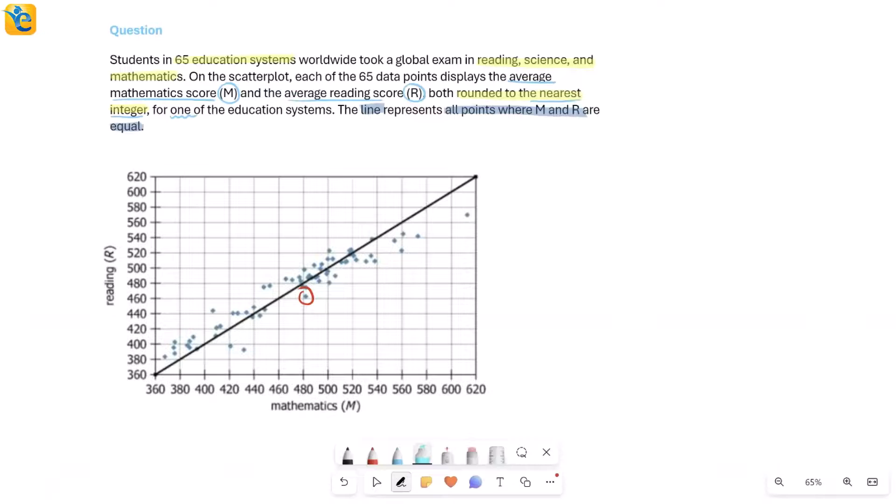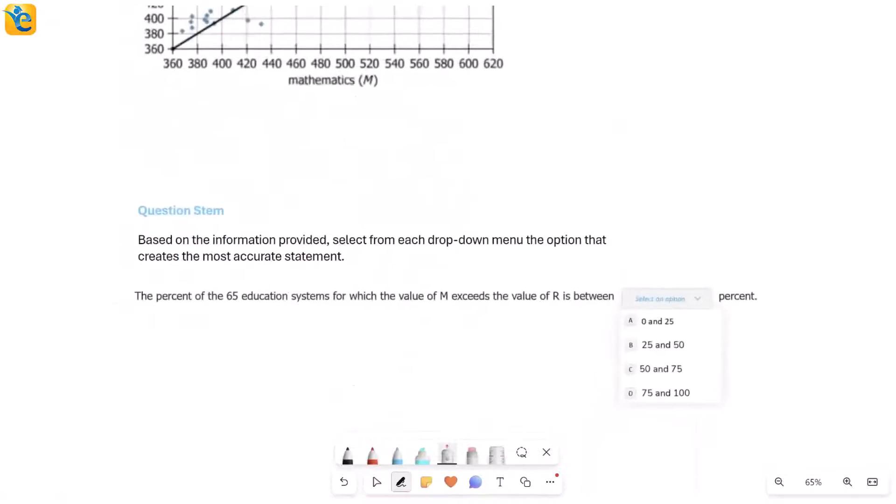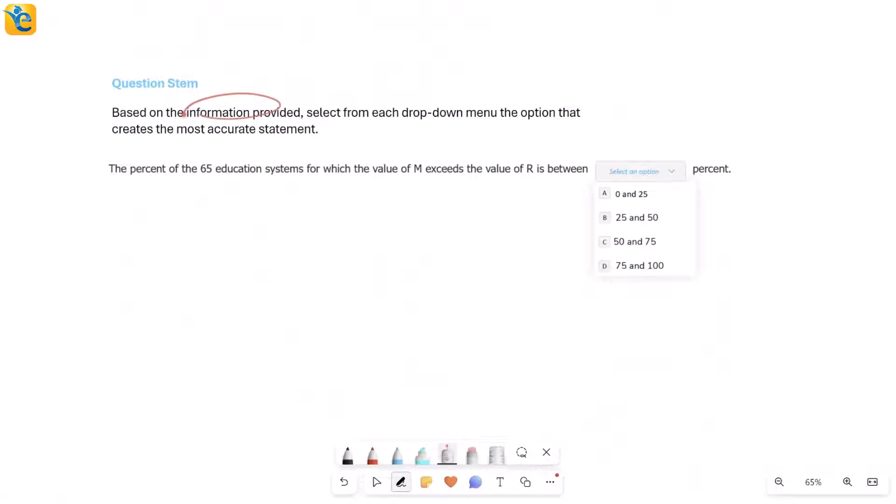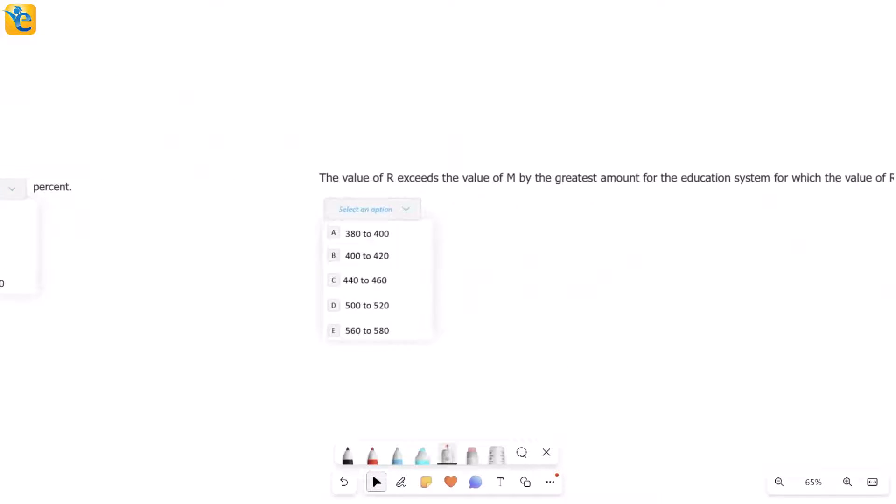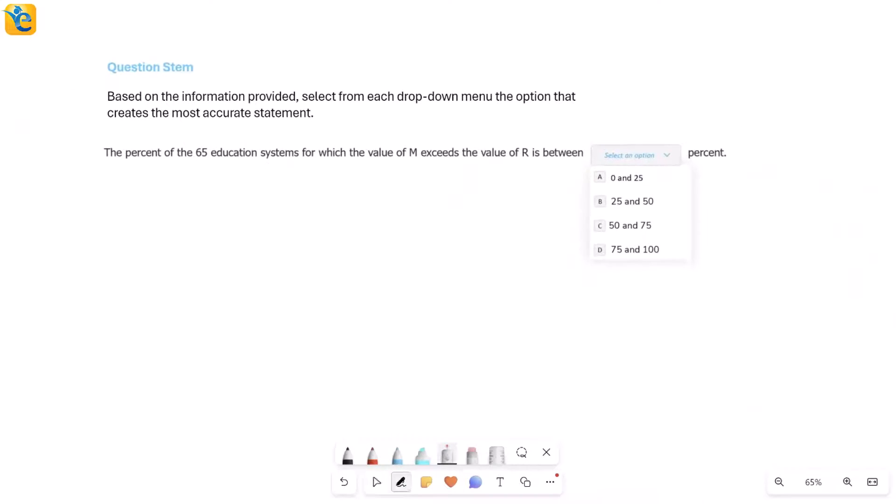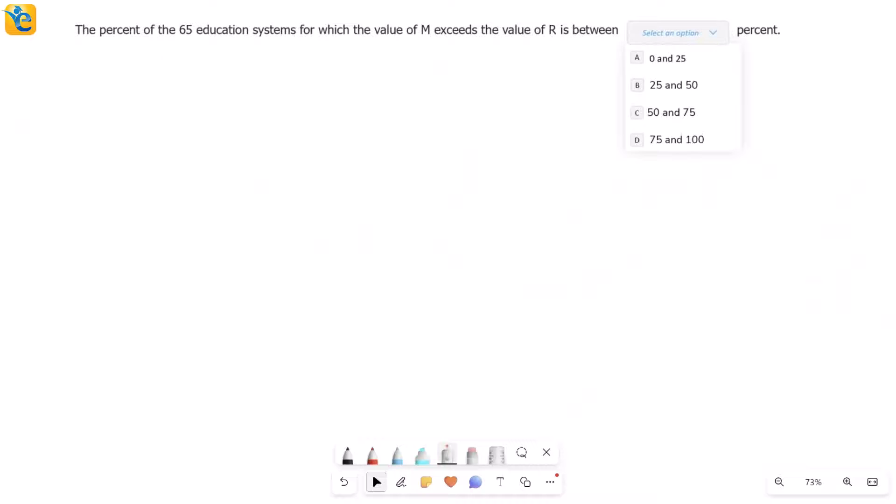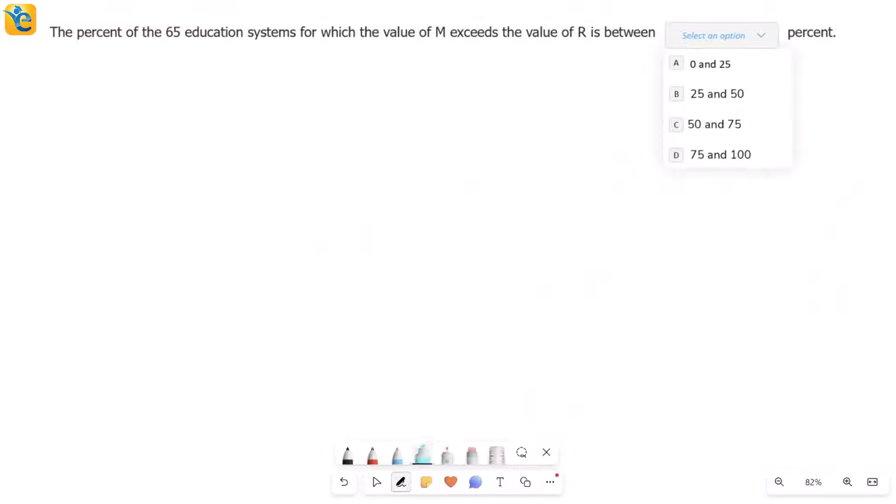Now that we've understood everything that's given to us, it's a relatively simple data set. Let's just see what is asked. So here we come and it says, based on all the information that was given, you select from the dropdown menu the option that makes sense. Now there are two statements that we will solve here. Let's only focus on the first one first. Here we go. It says the percent of the 65 education systems - that's all of the education systems - the percent of these for which the value of M exceeds the value of R is between dash and dash percent.